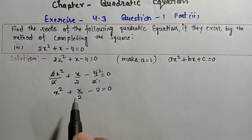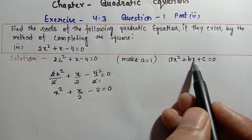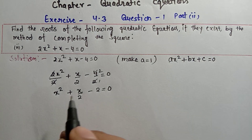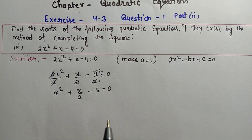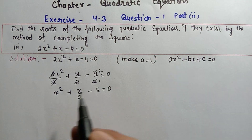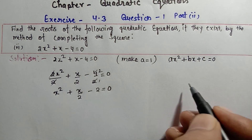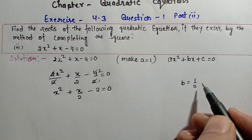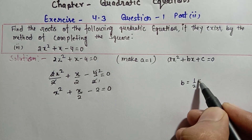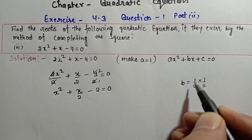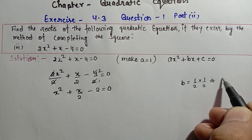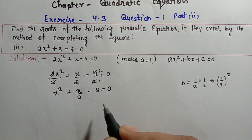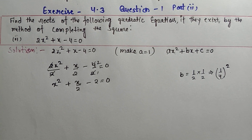For the second step, we look at b, the coefficient of x, which is 1/2 here. We take its half: (1/2) ÷ 2 = 1/4. Then we take the whole square of that, which is (1/4)². We add and subtract (1/4)² in the equation. This is your second step.